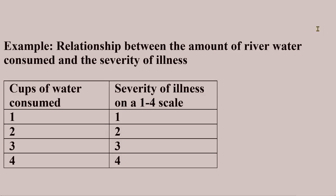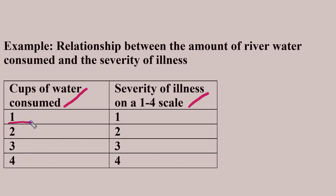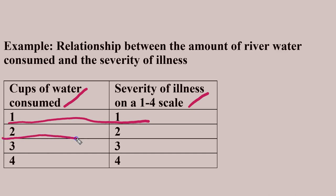Here's a chart of what this might look like. If we're looking at the cups of water consumed and the severity of the illness, and we find that these go together: one cup of water consumed has an illness index of 1 in severity. Two cups of water consumed, an illness index of 2.